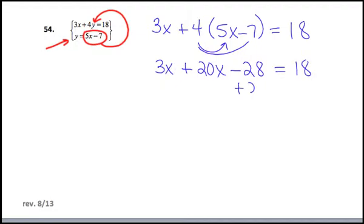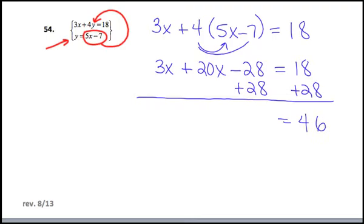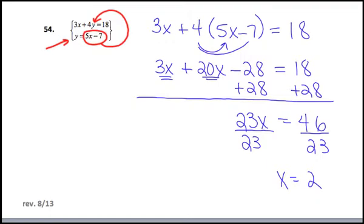Let's add 28 to both sides. On the right, we'll have 46. And on the left, the 3X and the 20X, I probably should have done that first, combined to be 23X. Now I'm going to divide both sides by 23, and I find one of the two answers. I find the value for X. X is equal to 2.